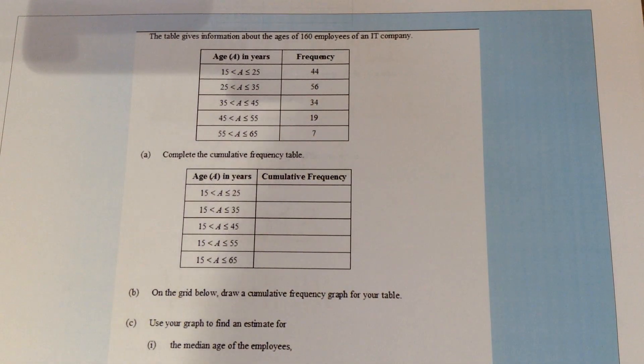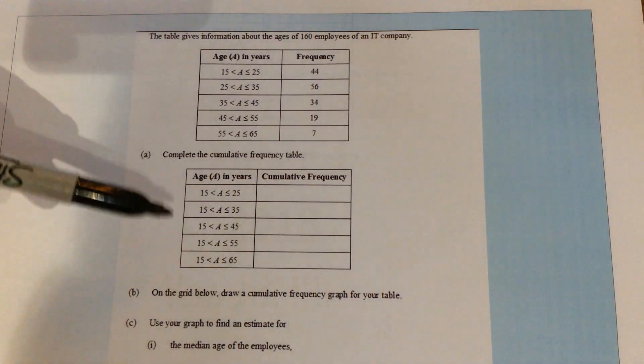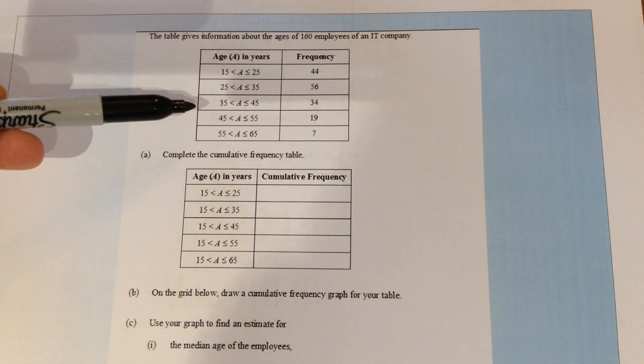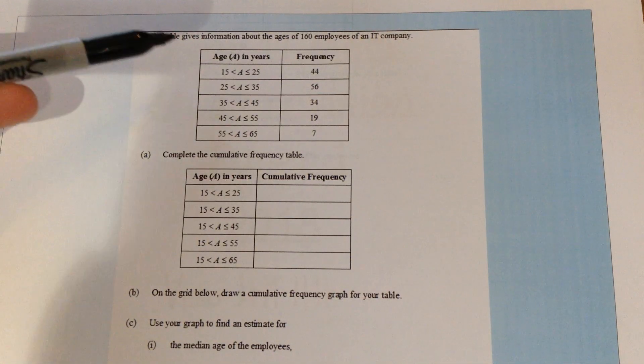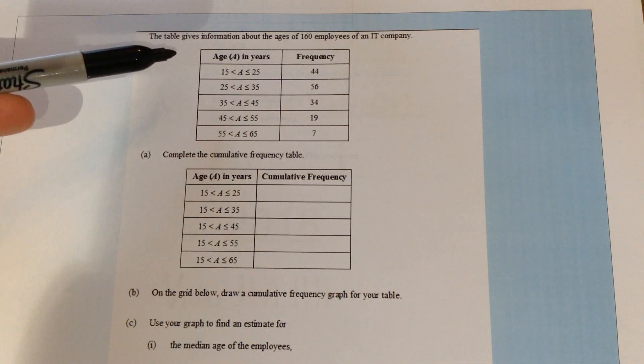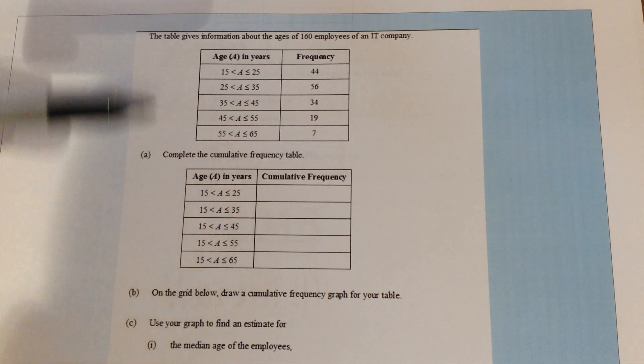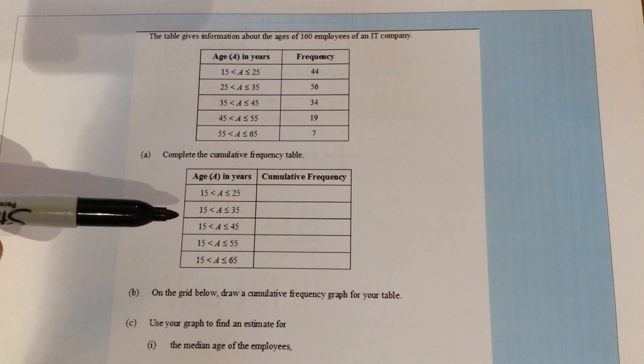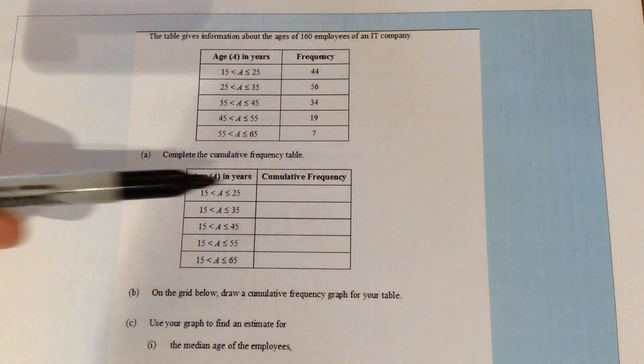If this topic comes up on an exam it will always be given in two separate tables. The first table showing the frequencies for, in this case, ages of people in an IT department, and the second table will need to be the cumulative frequency as shown here.